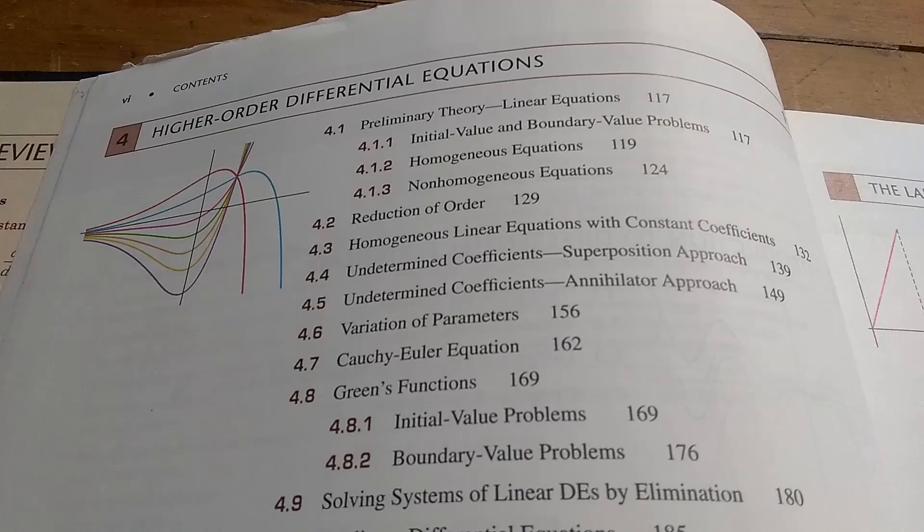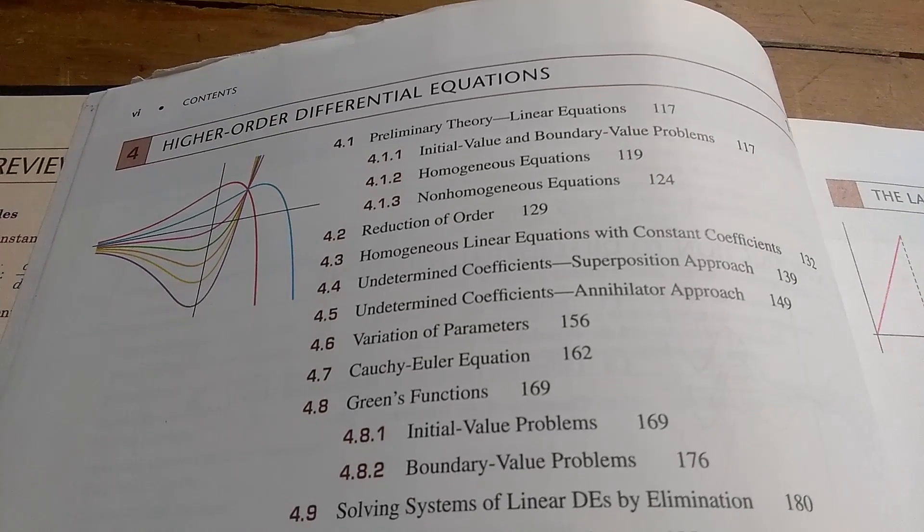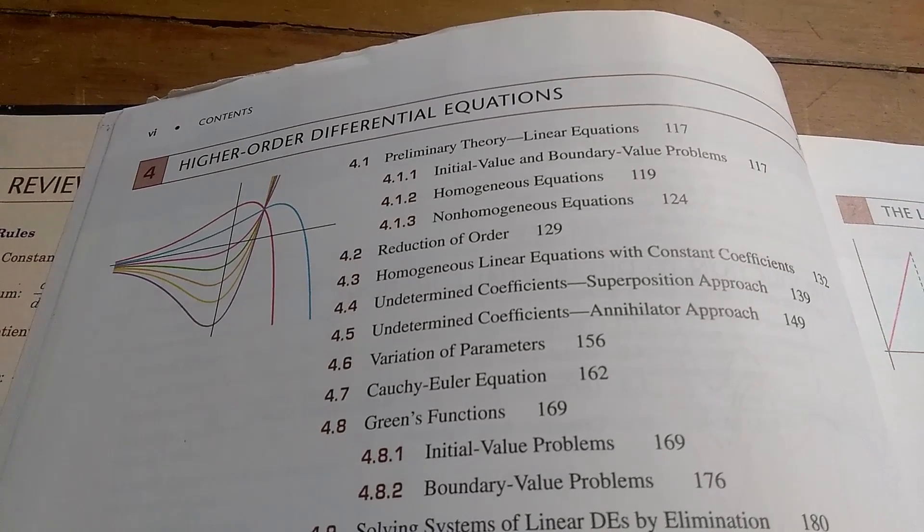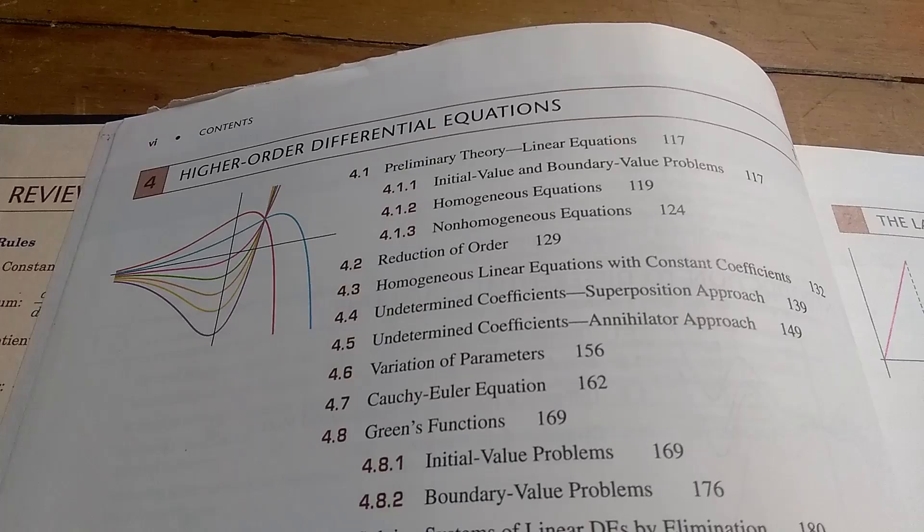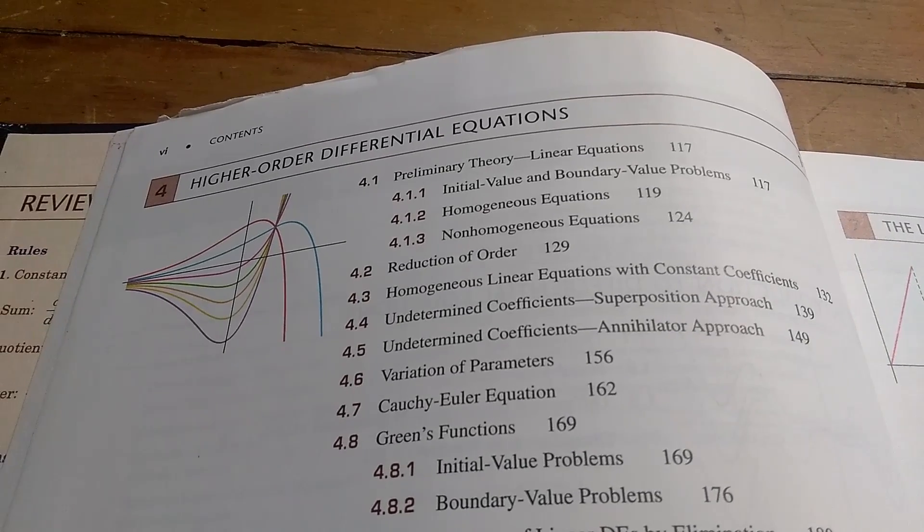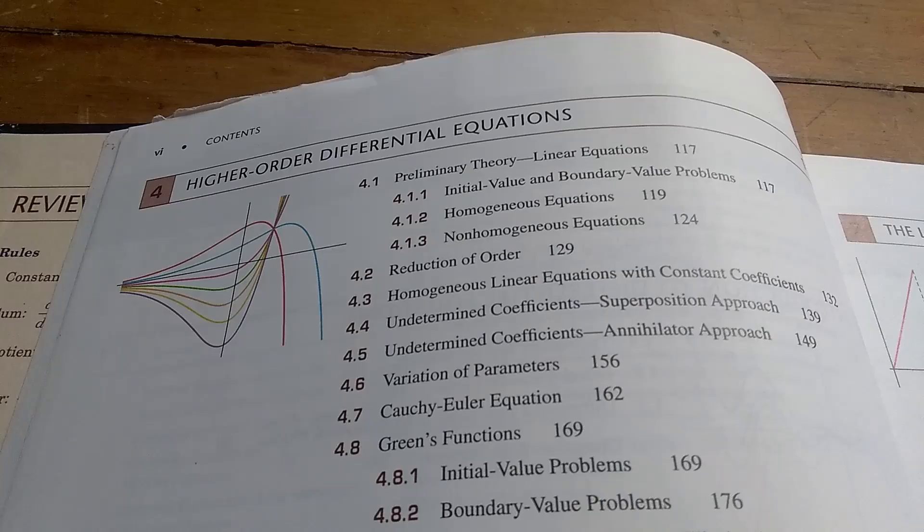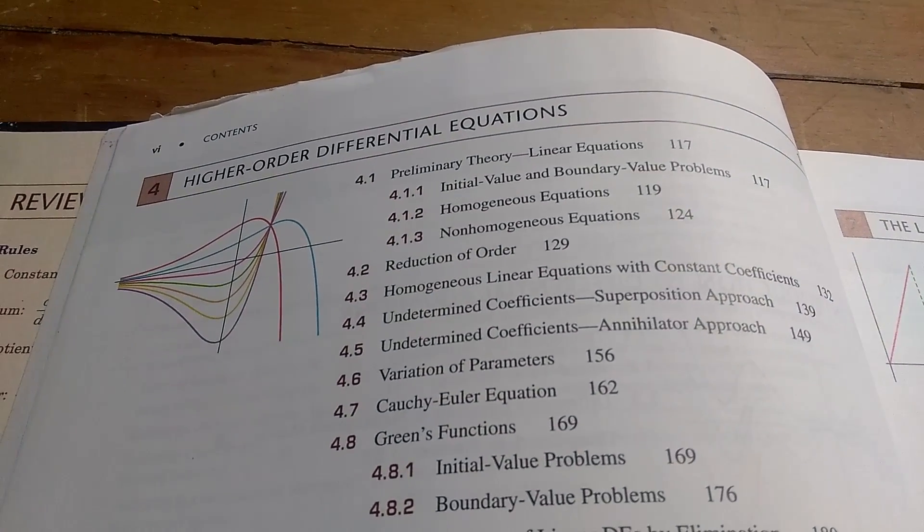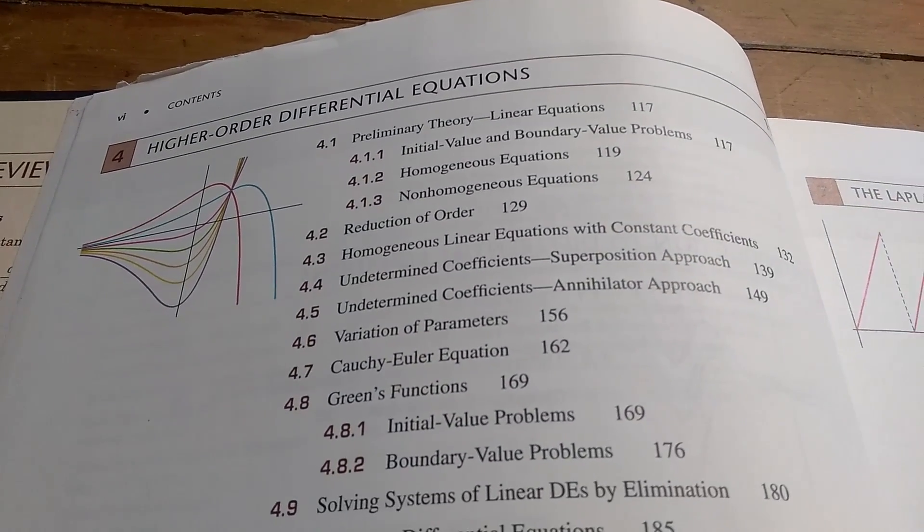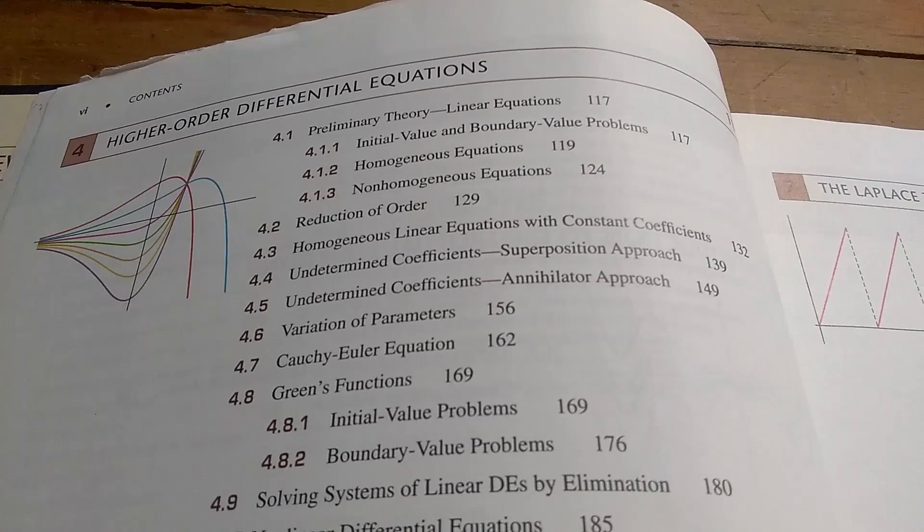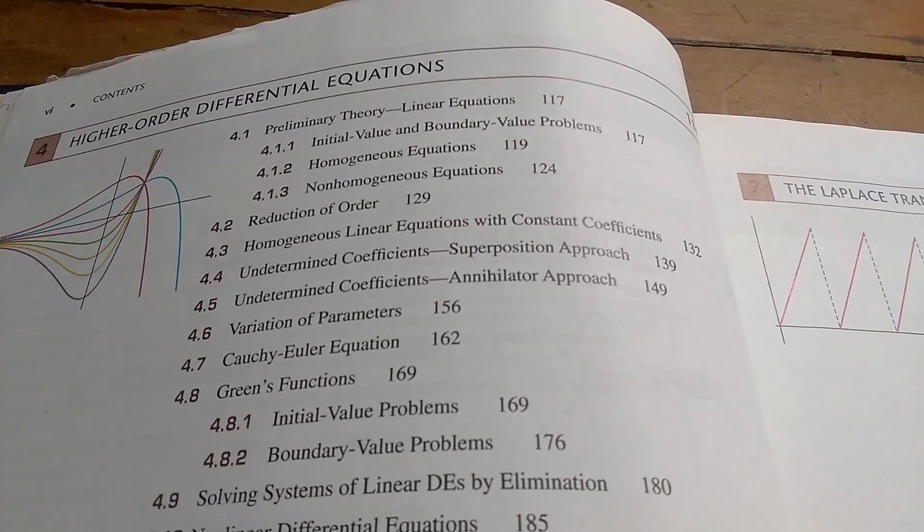Chapter 4 talks about higher order differential equations. So, 4.1 talks about all of the theory surrounding linear differential equations with constant coefficients. 4.2 talks about reduction of order. You can skip that section and just jump into 4.3, which is the homogeneous linear equations with constant coefficients.